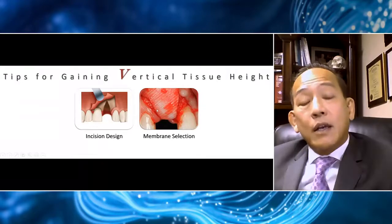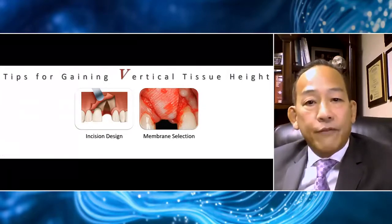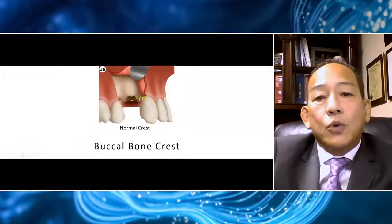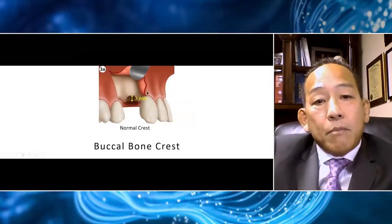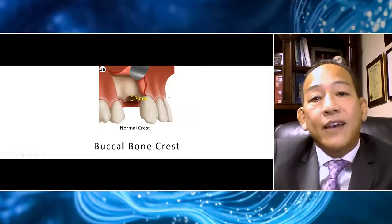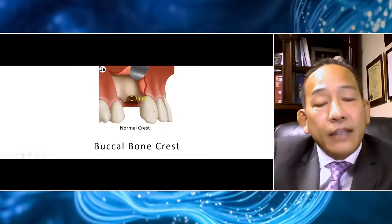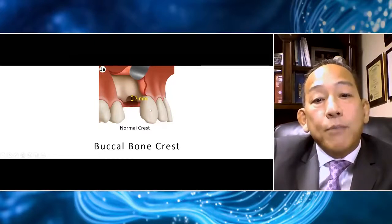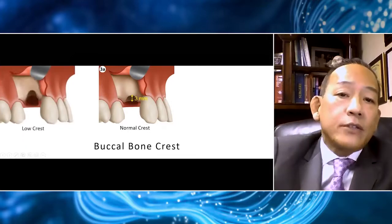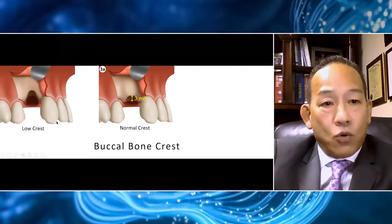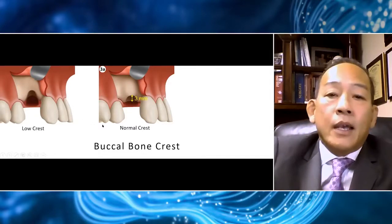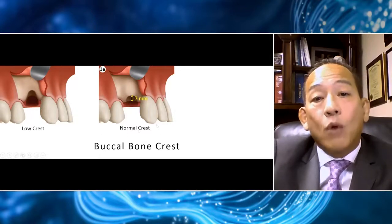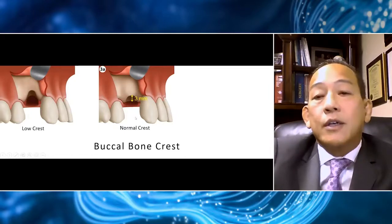I will illustrate this through a number of cases from simple to more difficult. When we talk about vertical soft tissue, we're really talking about bone and its underlying soft tissue. The objective in all of our bone augmentation in the aesthetic zone is to try to achieve a normal buccal crest — usually defined as three millimeters apical to the ideal gingival margin. Vertical defects are defects that have a low buccal crest, more than three millimeters from that ideal gingival height. So when we're augmenting, ideally we would like to have a normal buccal crest at three millimeters from the gingival margin.